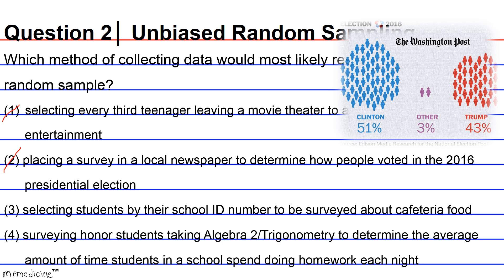As for answer choice 3: selecting students by their school ID number — assuming that the last digit of the school ID number is random, this should be a pretty good way of getting a representative sample. So I'm going to temporarily keep this and take a look at answer choice 4.